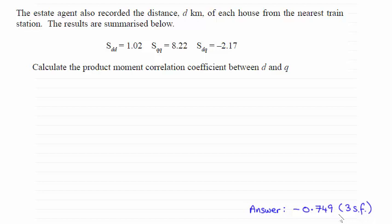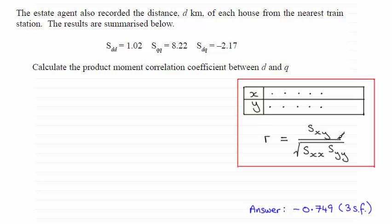So in order to find the product moment correlation coefficient, you should be familiar with this formula here, only it relates to X and Y. In this example, we've got the variables D and Q.